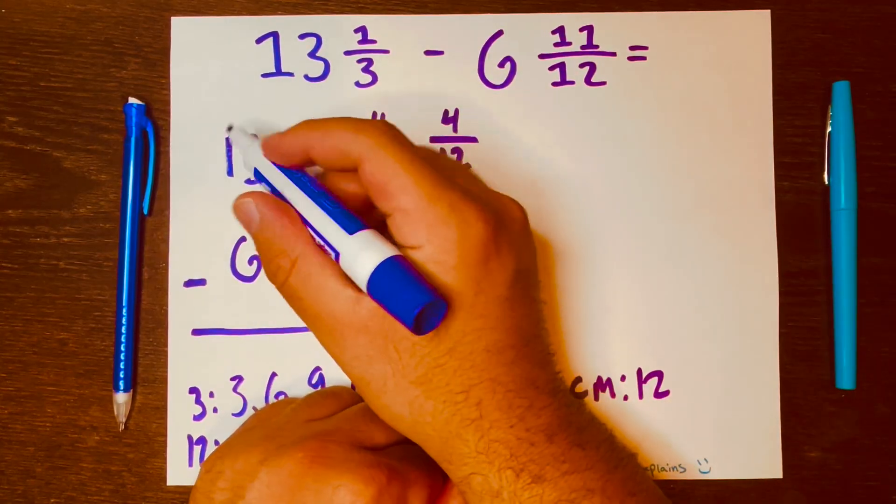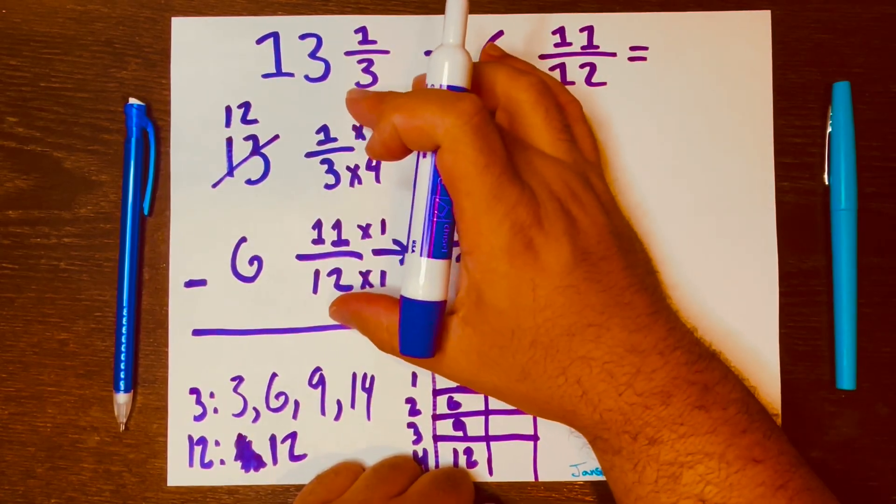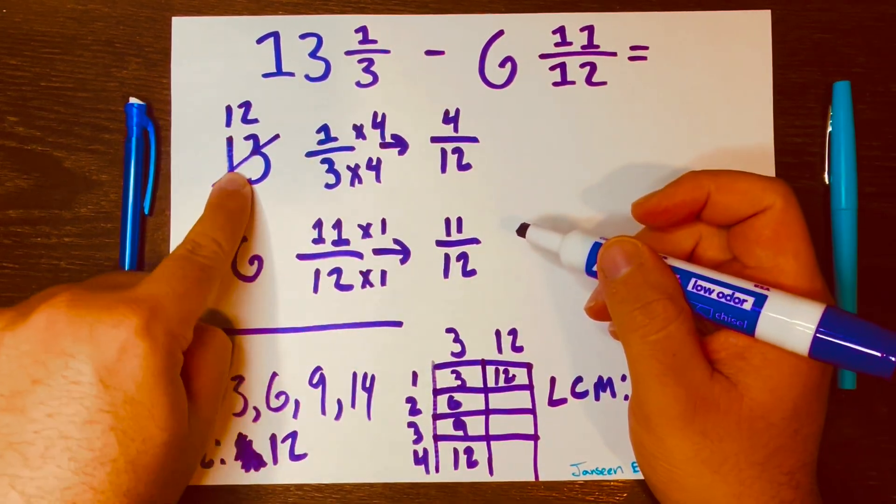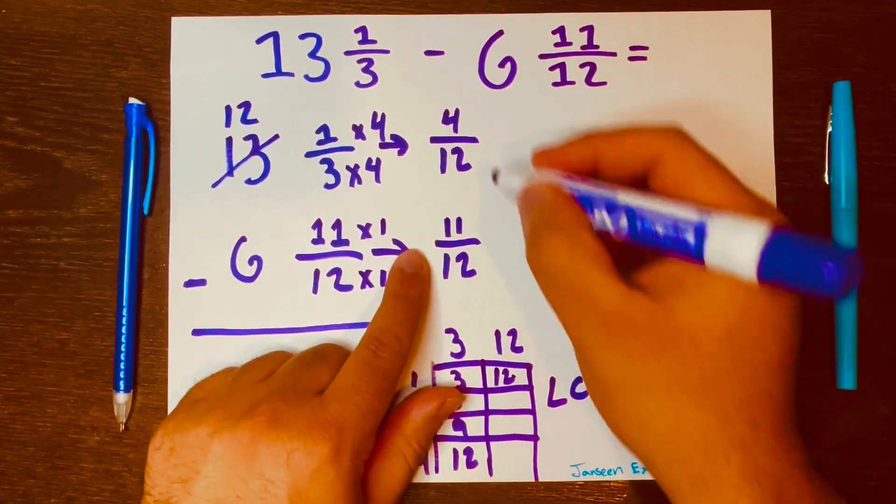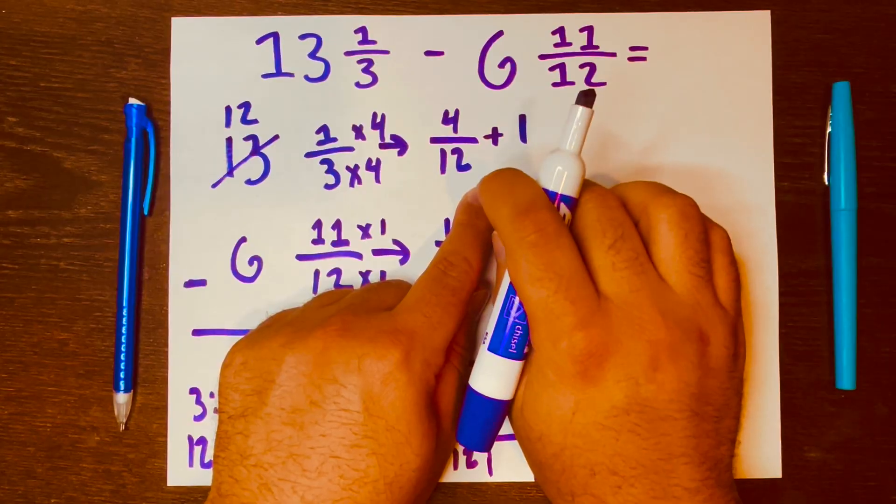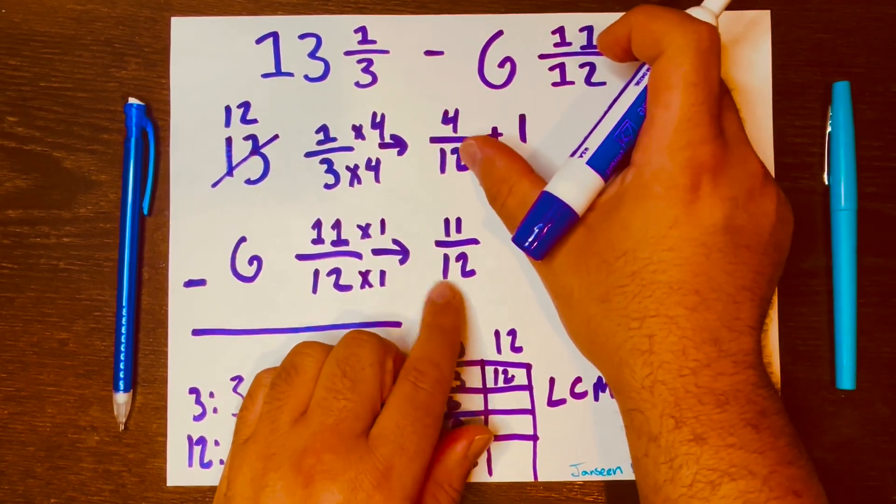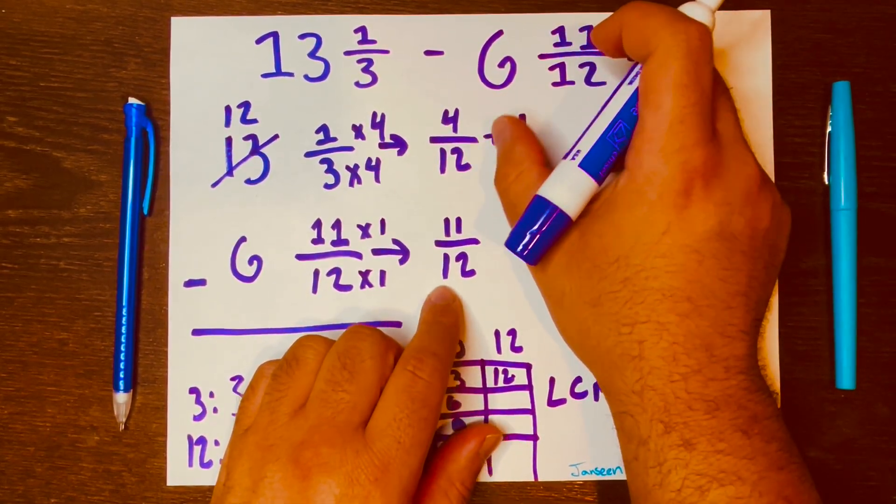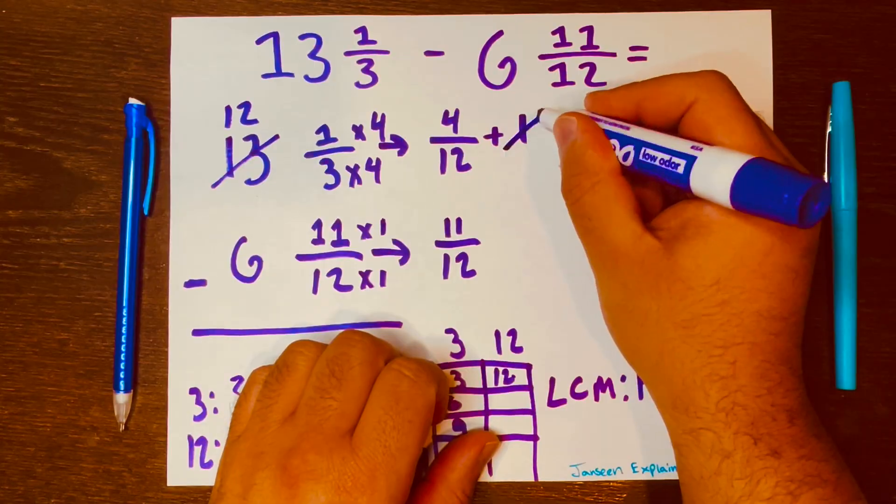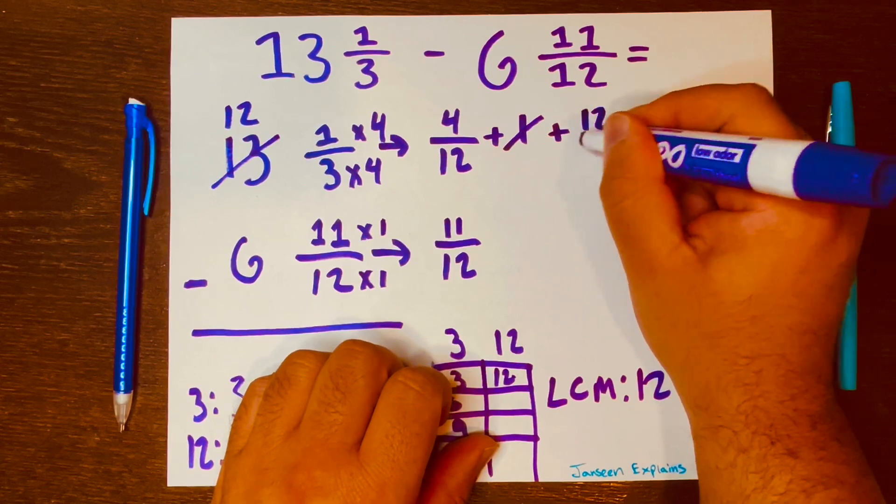So we're going to borrow a 1 from this 13. So now it becomes 12. This is the reason why I wanted to start with the fractions first. And then we'll move on to the whole numbers. So now it's not a 13 no more, is a 12. And so I'm going to write that 1 right here. And that 1, we're going to convert that borrowed 1 into a fraction. Since our denominators are 12s or 12, we'll use 12/12, which is the same as 1 whole, right?